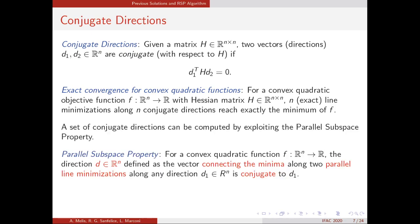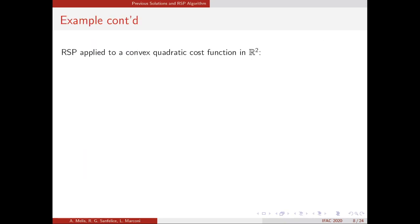To build a set of conjugate directions, we can exploit the parallel subspace property, which states that given two parallel line minimizations along a direction d1 belonging to R^n, the direction given by the vector connecting the minima found along these two lines is conjugate to the direction d1.